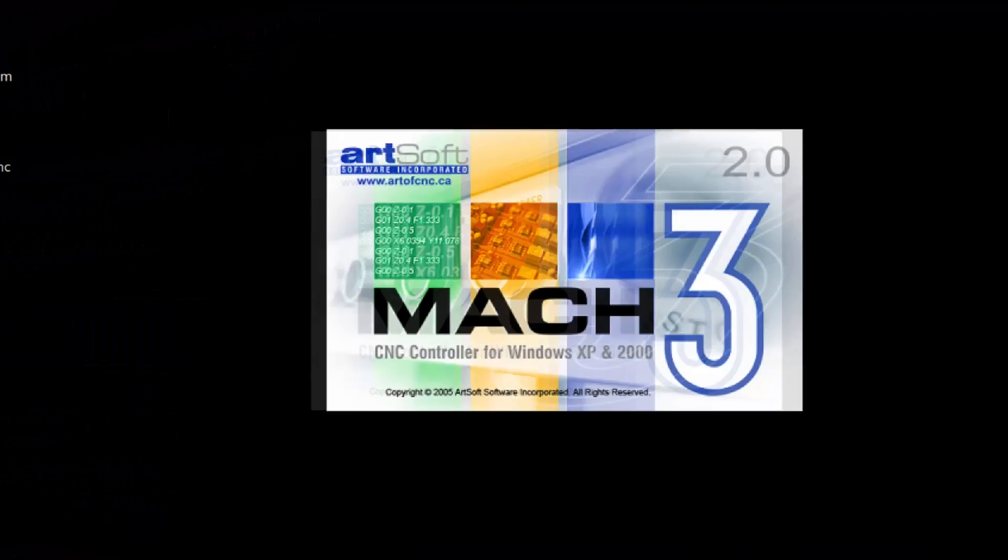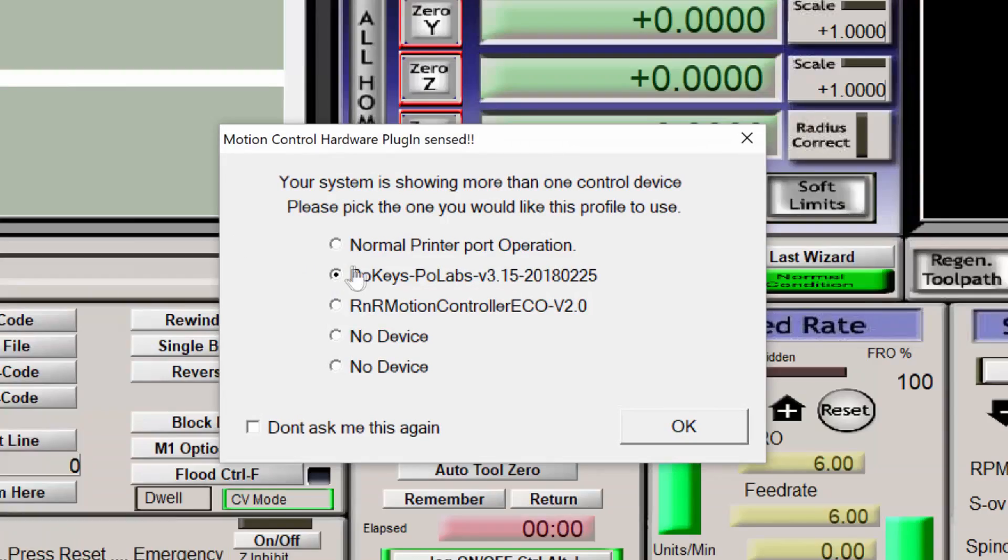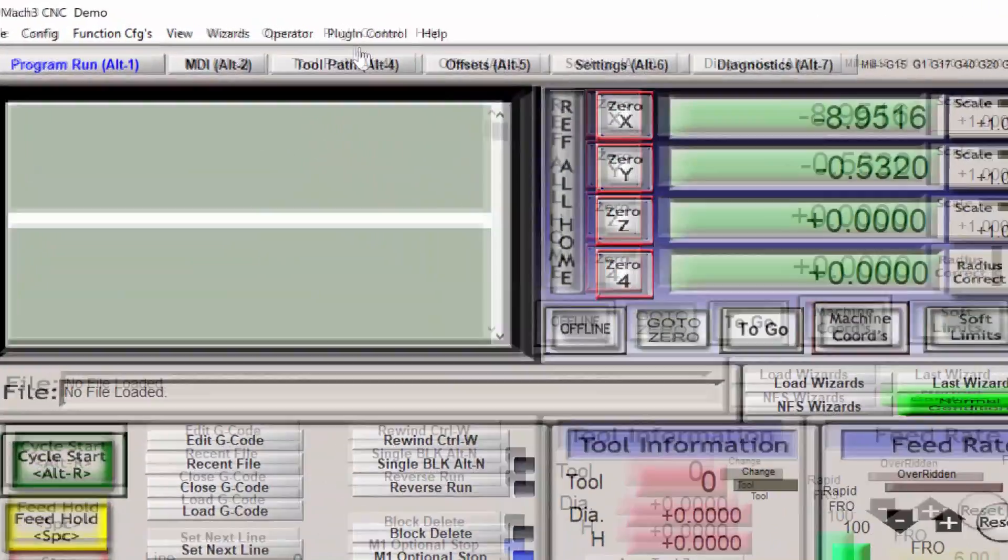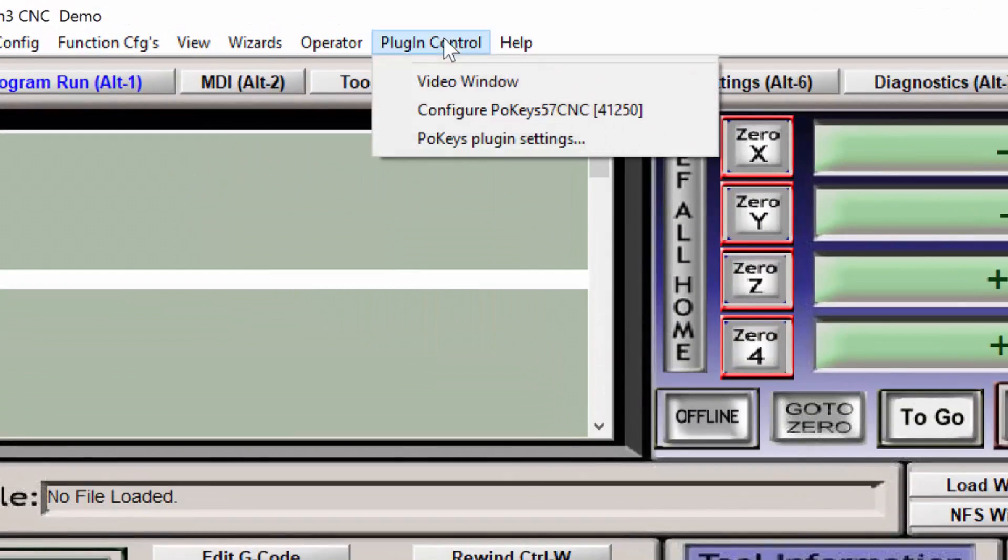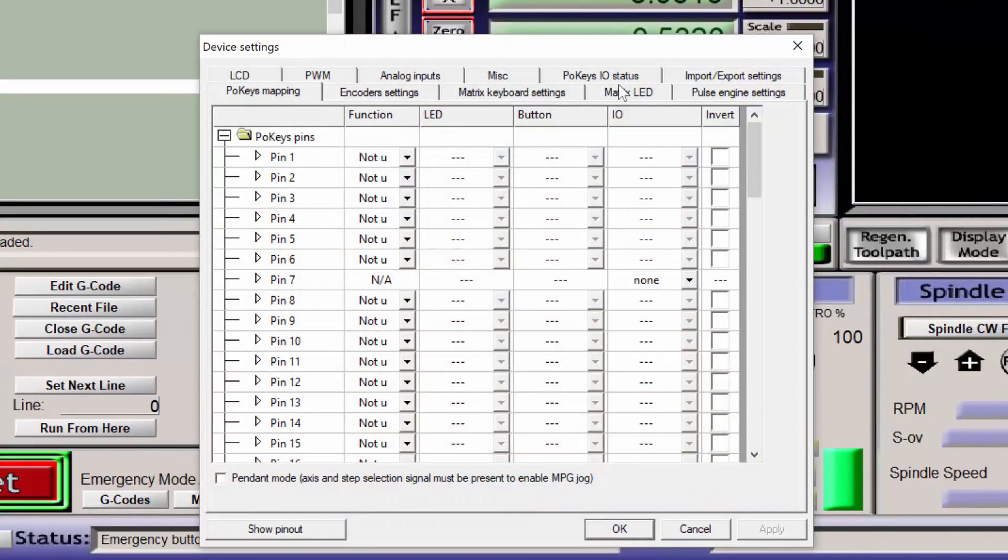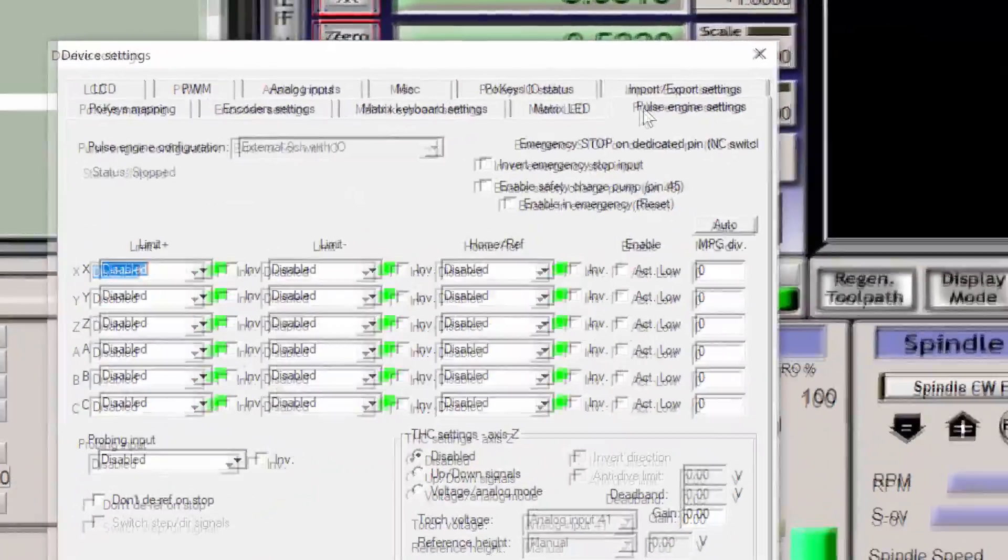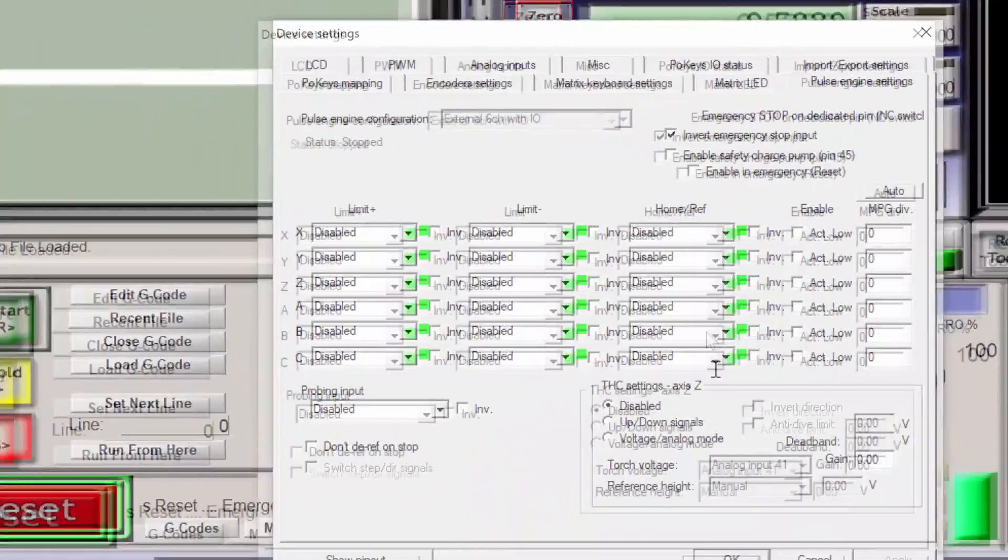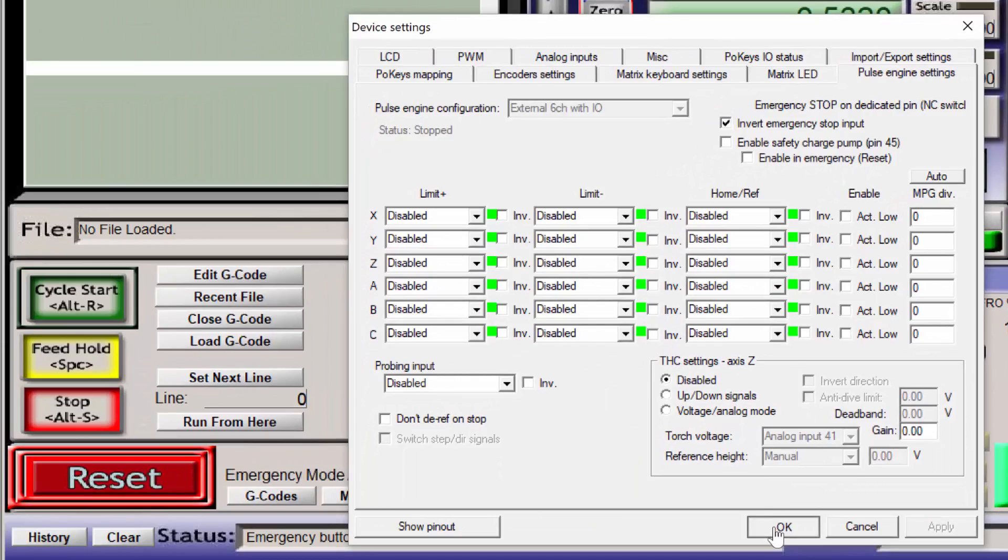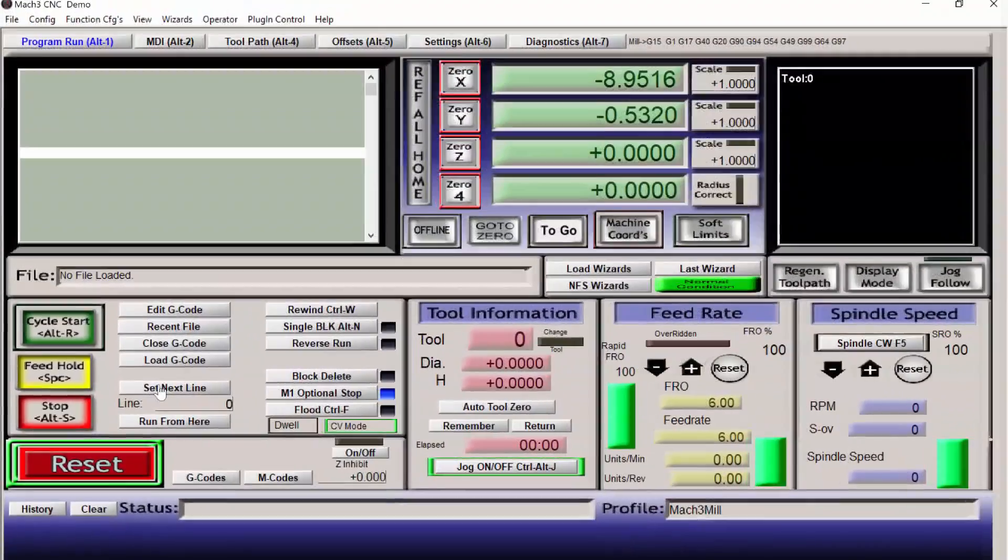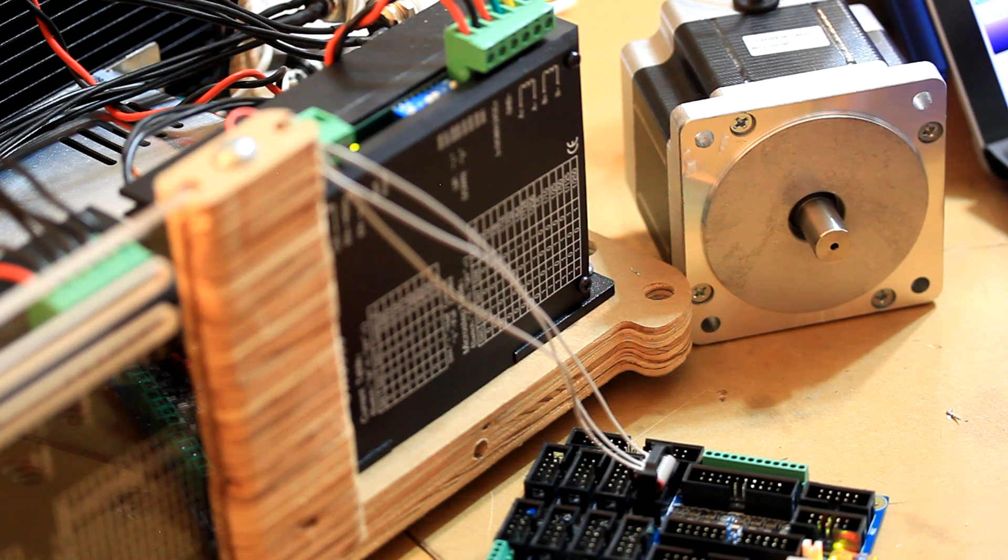Go into Mach 3. Make sure that the POKEY's plugin is selected. Press OK. We need to go into the plugin configuration to turn off the emergency stop notification. Click on the pulse engine settings tab. We're going to trick the interface into thinking that the emergency stop is not pressed by setting the invert emergency stop input. You can now click on the reset button and get out of the emergency active mode. I'm going to use the left and right arrow keys to move the x-axis motor.